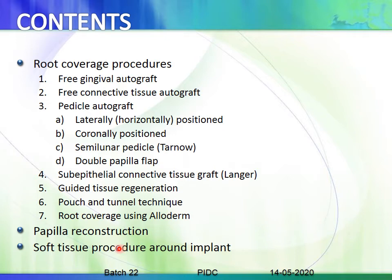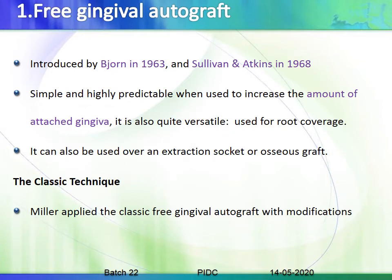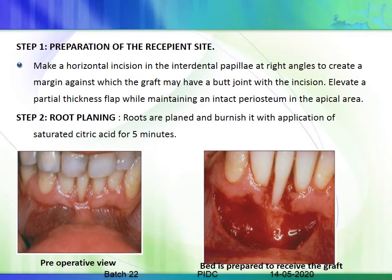To start with, the first root coverage technique is the free gingival autograft. This technique was introduced by John in 1963 and Sylvan Atkins in 1968. It is a simple and highly predictable technique mainly used to increase the amount of attached gingiva. It is a versatile procedure also used for root coverage. Miller applied this as the classic free gingival autograft technique and later modified it for coverage procedures.